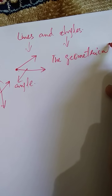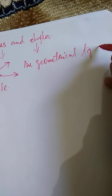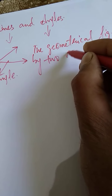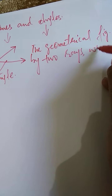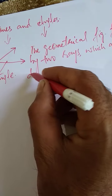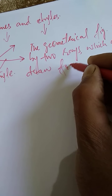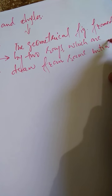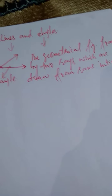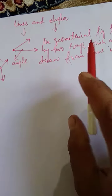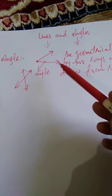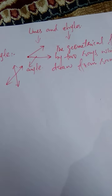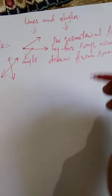The geometrical figure formed by two rays which are drawn from the same initial point — this is the definition of an angle. An angle is the geometrical figure formed by two rays which are drawn from the same initial point.